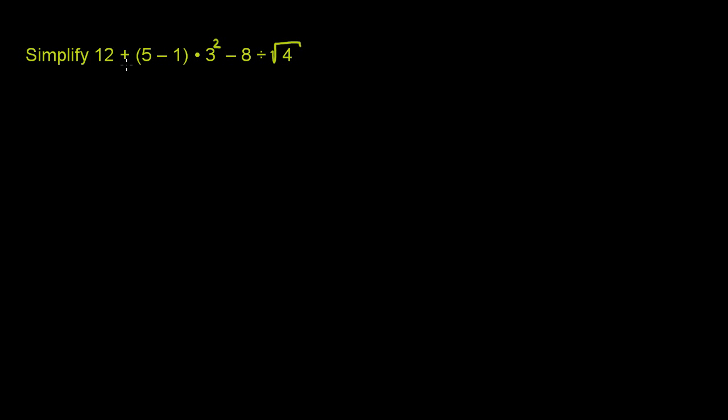We're asked to simplify 12 plus, and then in parentheses, 5 minus 1 times 3 to the second power, or 3 squared, minus 8 divided by the square root, or really the principal root, of 4.